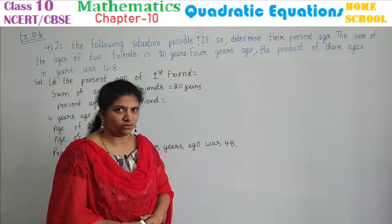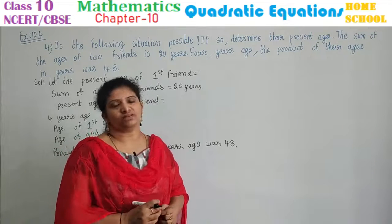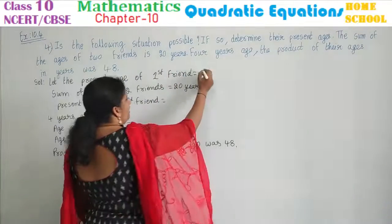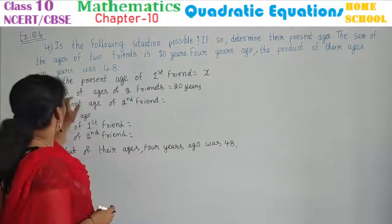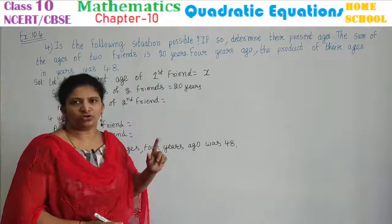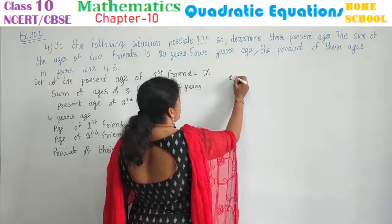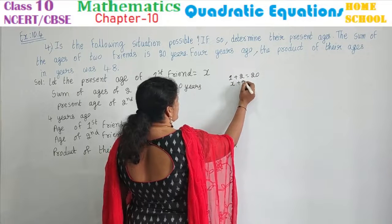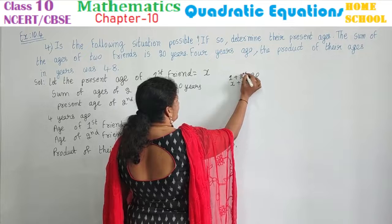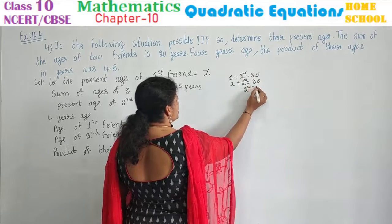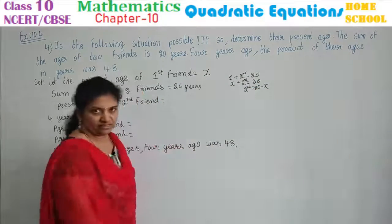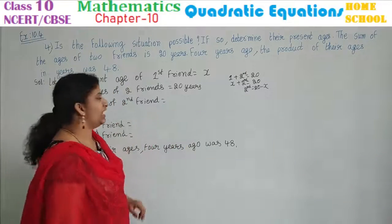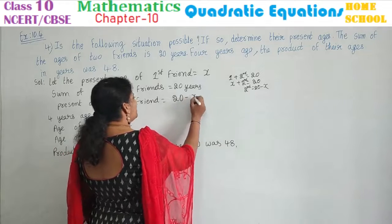We know the sum of two friends' ages is 20 years. Let us start the solution by assuming one friend's age. Let the present age of the first friend be x years. Since first friend's age plus second friend's age equals 20, the second friend's age is 20 minus x. So, present age of second friend is equal to 20 minus x years.